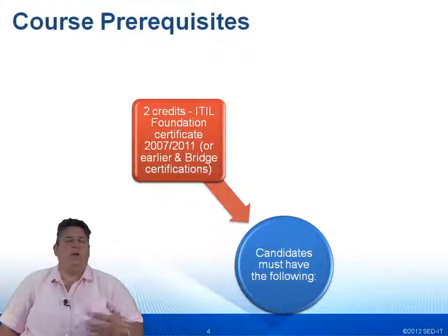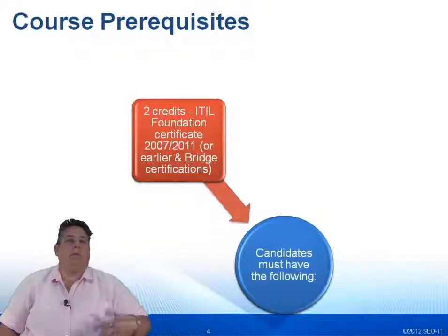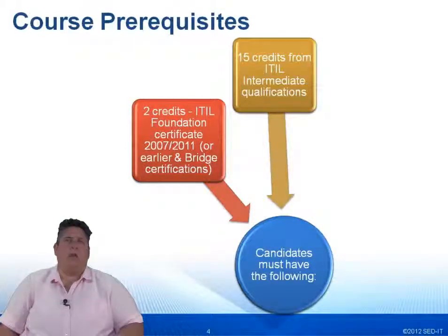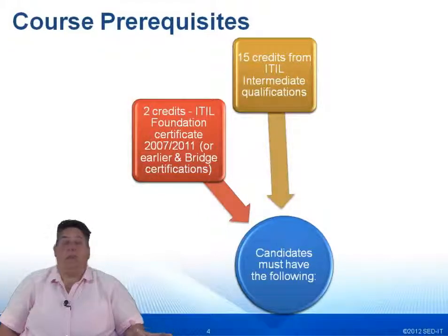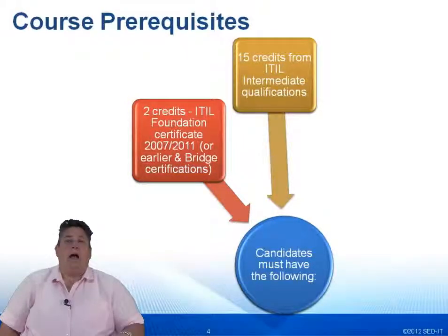The prerequisites for this course are very strict. You must have an EIDL Foundation Certificate from either 2007 or 2011, or from an earlier version plus the bridge — though the bridge is no longer in place, so if you have not received the 2007 or 2011 certificate, you'll need to sit that class in full, which is two credits. Additionally, you're going to need another 15 credits from the EIDL Intermediate courses or Complementary courses. Those 15 credits could come from all five service life cycles, any combination of intermediate life cycle or capability courses, and/or some Complementary Courses. The Complementary Course list can be found at www.idl-official-site.com.